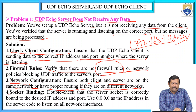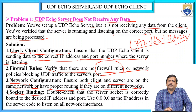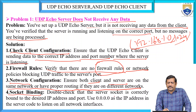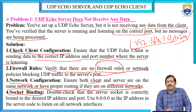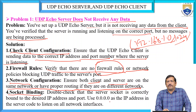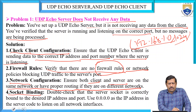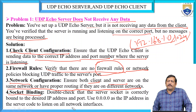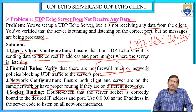Next, socket binding. Double-check that the server socket is correctly bound to the desired IP address and port. We can resolve issues by using 0.0.0.0 as the IP address in the server code to listen on all network interfaces. These are the solutions for the UDP Echo Server when it is not receiving any data.